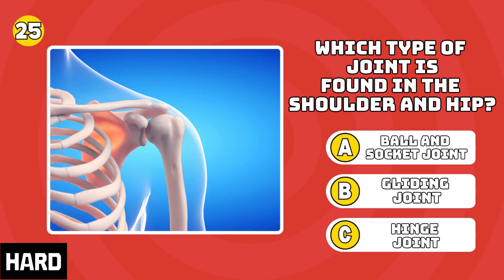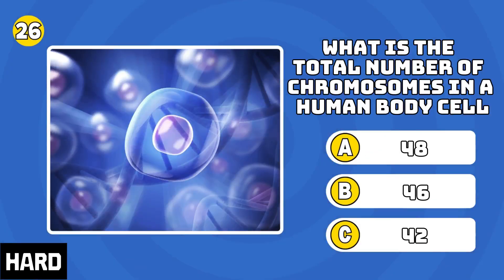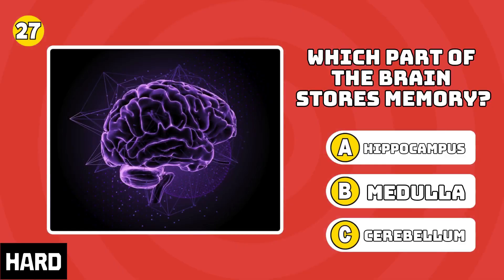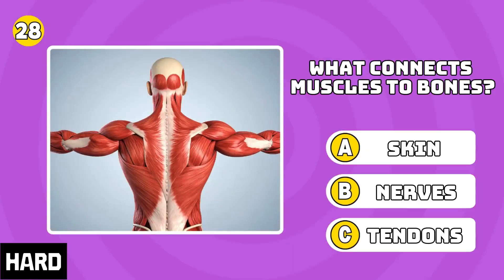Which type of joint is found in the shoulder and hip? What is the total number of chromosomes in a human body cell? Which part of the brain stores memory? What connects muscles to bones?